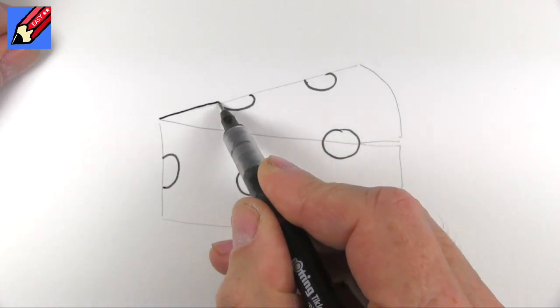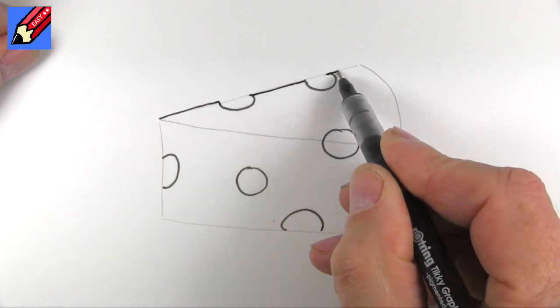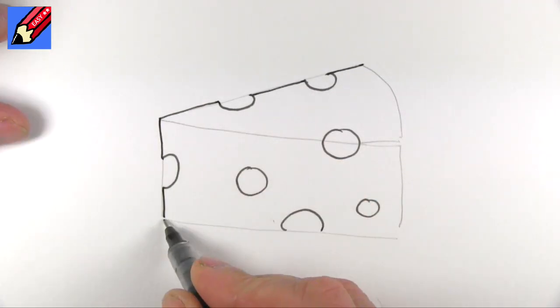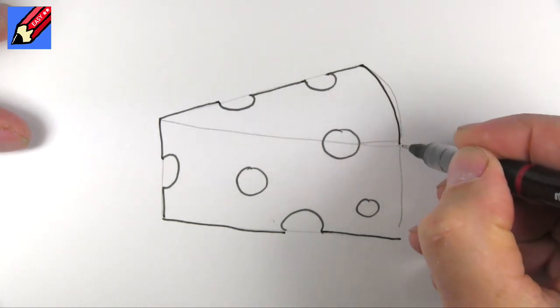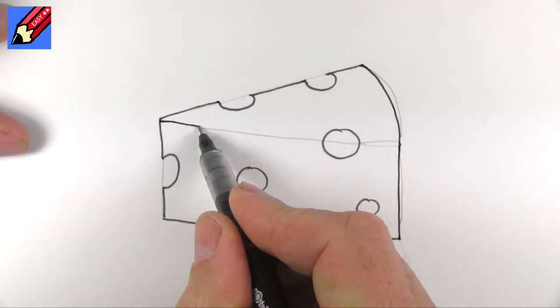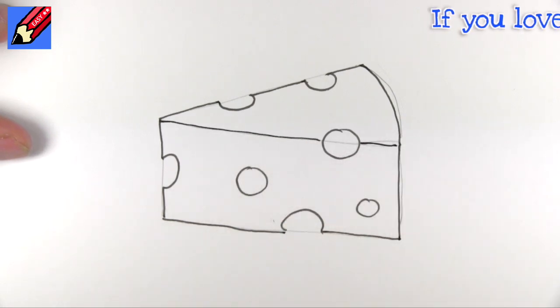And then we can join up the outsides like that. And we can go across to there, across to there. This will come around there and down.